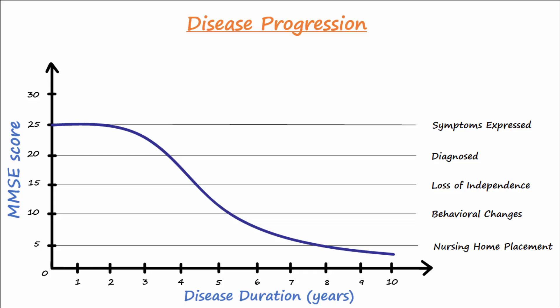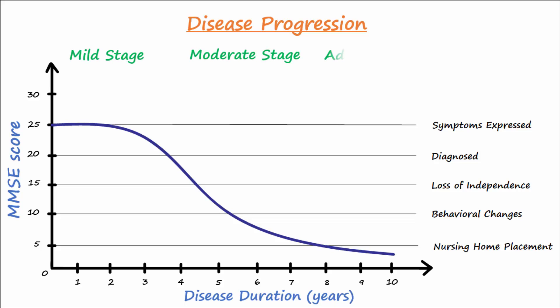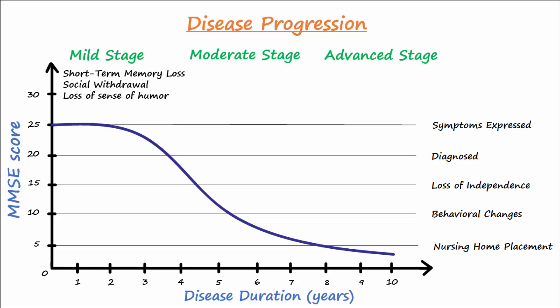This graph correlates the MMSE scores with disease progression. Patients progress through mild, moderate, and advanced stages over an average of about a 10-year period. In addition to short-term memory loss, patients in the initial stages start to experience mild changes in personality such as social withdrawal and loss of sense of humor. The moderate stage may last several years, and patients begin to experience language deficits and lack of ability to problem solve.